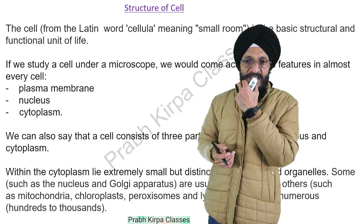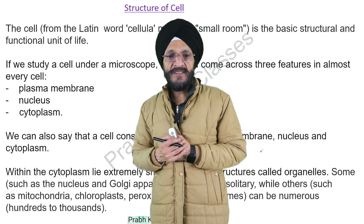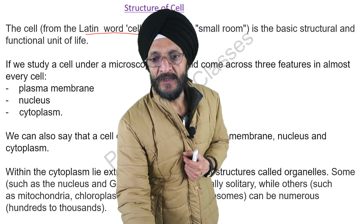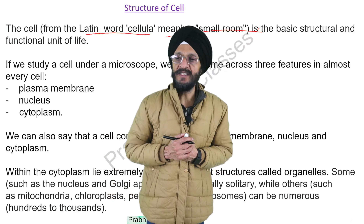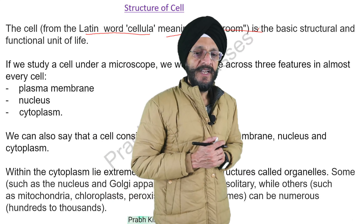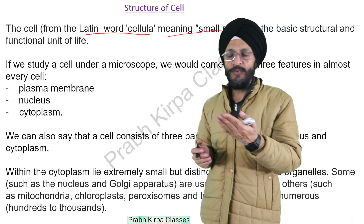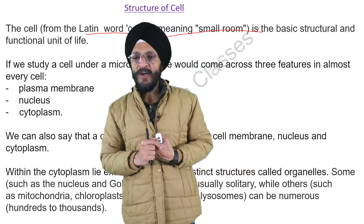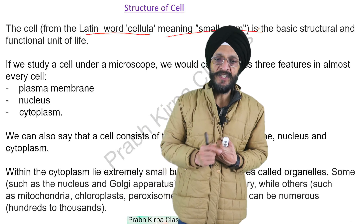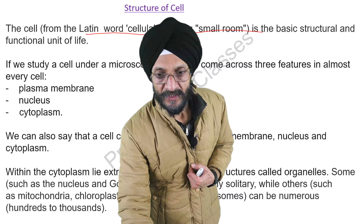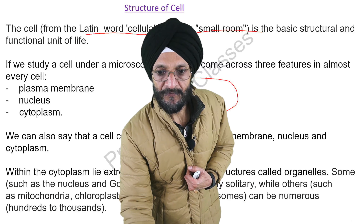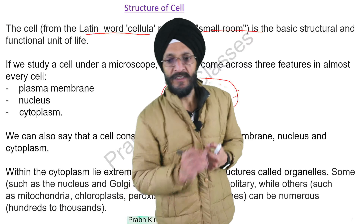Now, what is the structure of the cell? The word 'cell' has been taken from the Latin word 'cellula,' which means small room. Cell is the basic structural and functional unit of life. If we study a cell under a microscope we would come across three features in almost every cell: a plasma membrane, a nucleus, and cytoplasm, which is the fluid present throughout the cell.